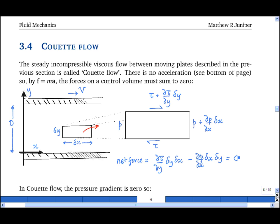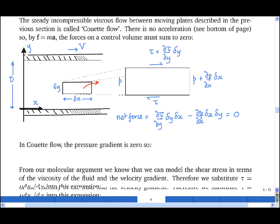In Couette flow, by definition of Couette flow, the pressure gradient is zero, which implies that, by the above equation, d tau by dy must also be equal to zero.